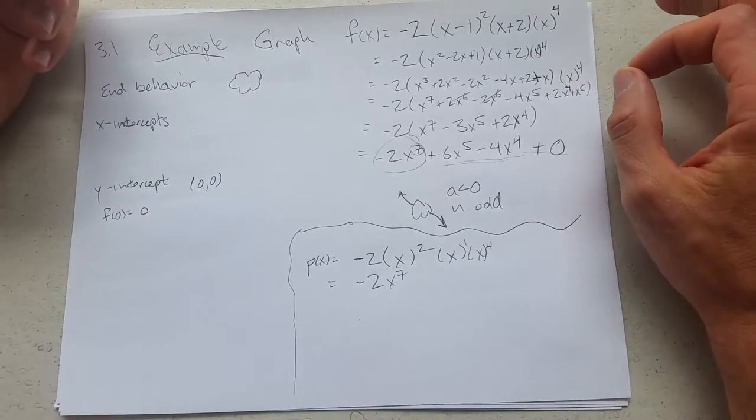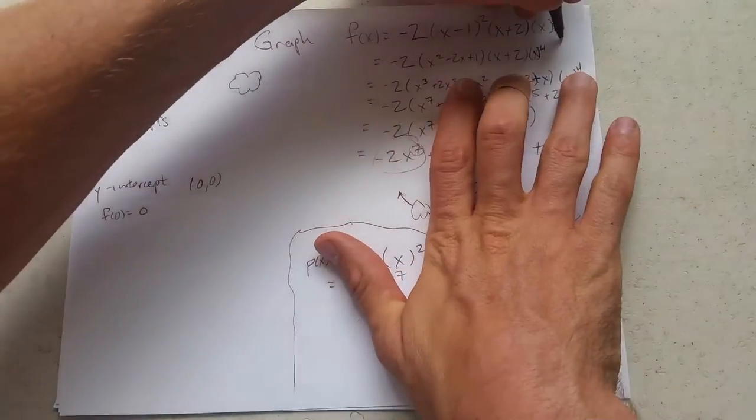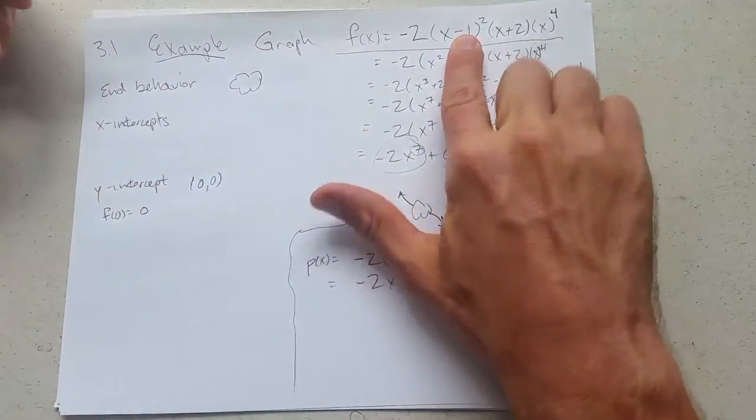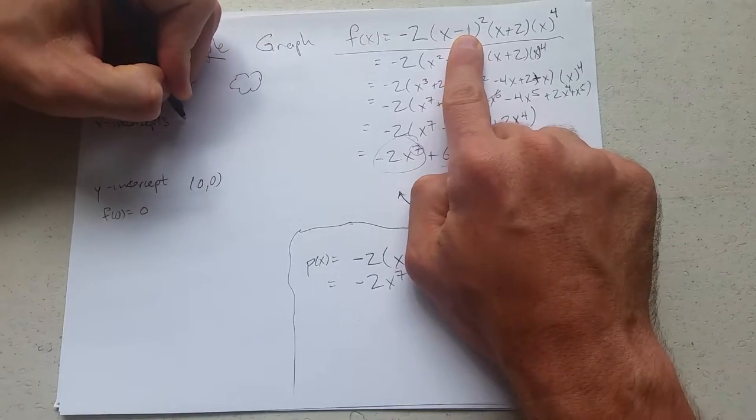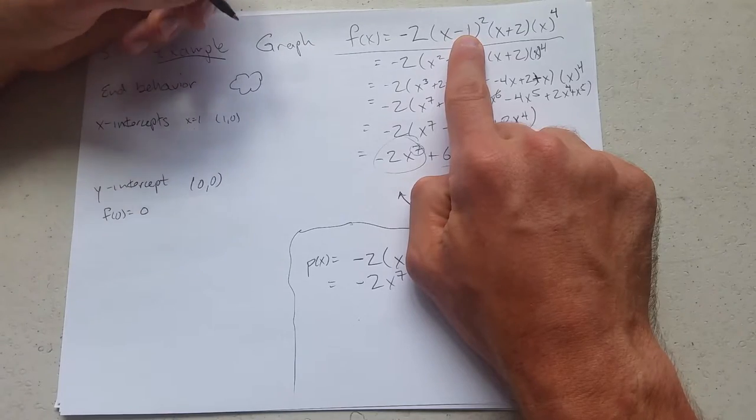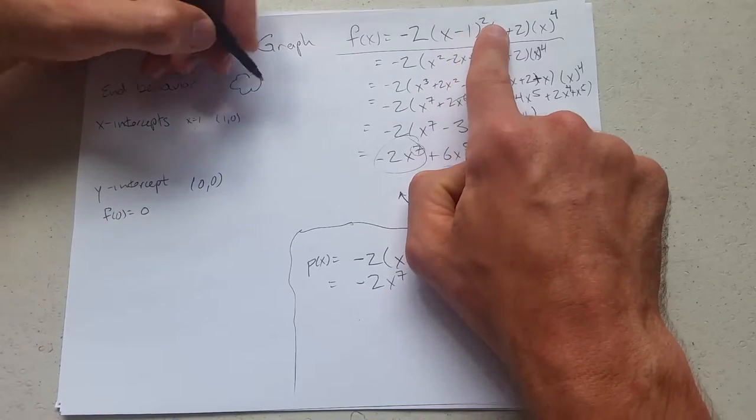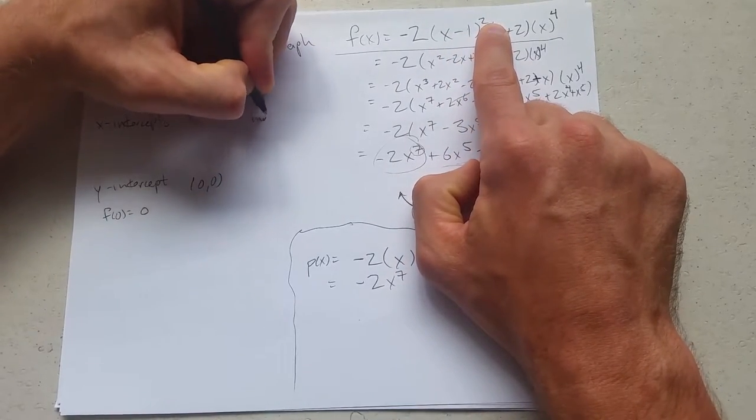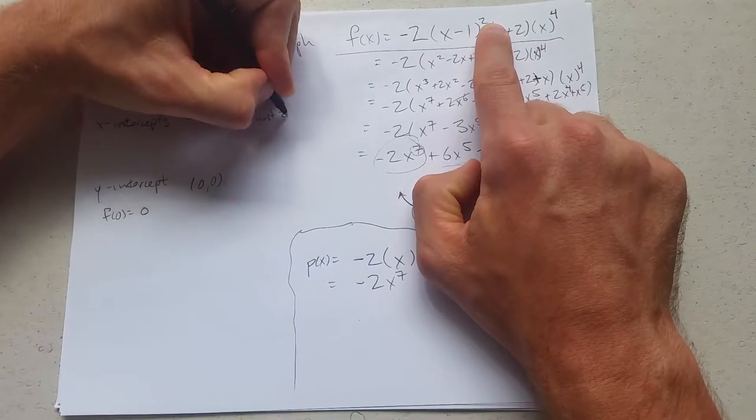X-intercepts. How do I get these? Keep the factored form. 1. X equals 1. That corresponds to 1, 0. What is multiplicity? Multiplicity is not 1. Multiplicity is 2. Which means bounce.